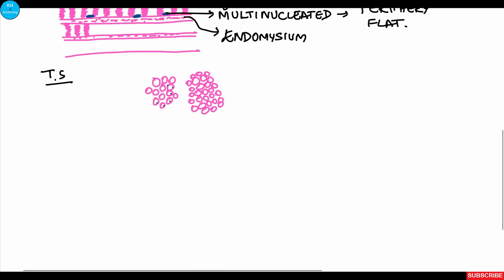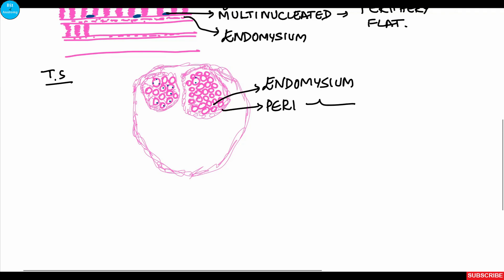Each cell is surrounded by endomysium. The bundle is surrounded by connective tissue called perimysium, and the entire muscle is surrounded by thick connective tissue called epimysium. The major function is to carry blood vessels, lymphatics, and nerves.